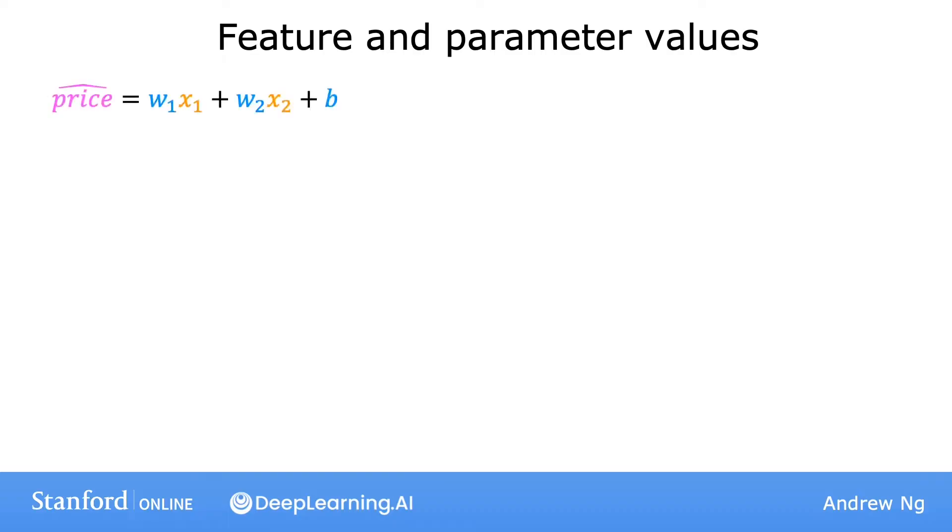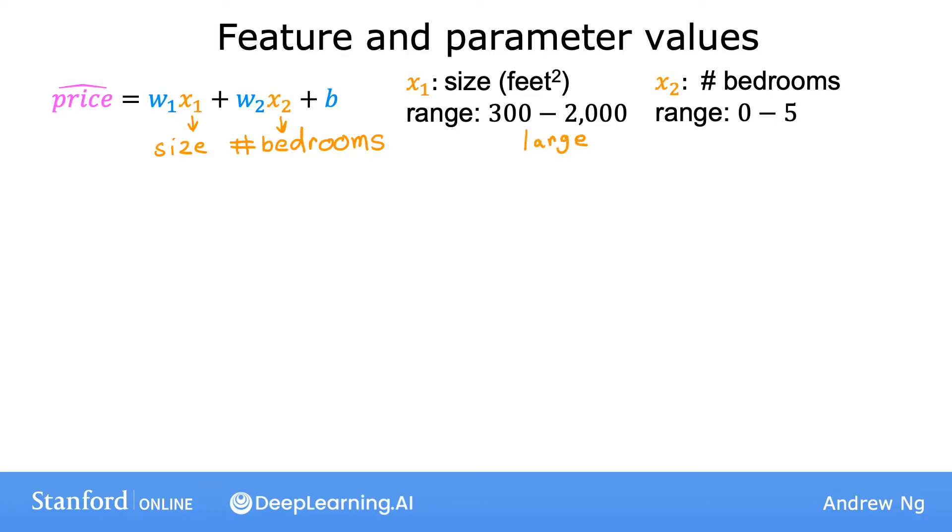As a concrete example, let's predict the price of the house using two features: x1, the size of the house, and x2, the number of bedrooms. Let's say that x1 typically ranges from 300 to 2000 square feet, and x2 in the dataset ranges from 0 to 5 bedrooms. So for this example, x1 takes on a relatively large range of values, and x2 takes on a relatively small range of values.